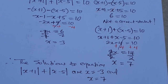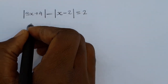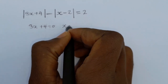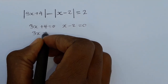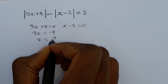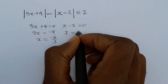If you are with me up to this point, please subscribe, hit the like button, comment, and share. Here is the next question — feel free to pause and try it out. The first step is to find the critical values: 3x plus 4 equals 0 and x minus 2 equals 0. From the first: 3x equals negative 4, so x equals negative 4 thirds. From the second: x equals positive 2.